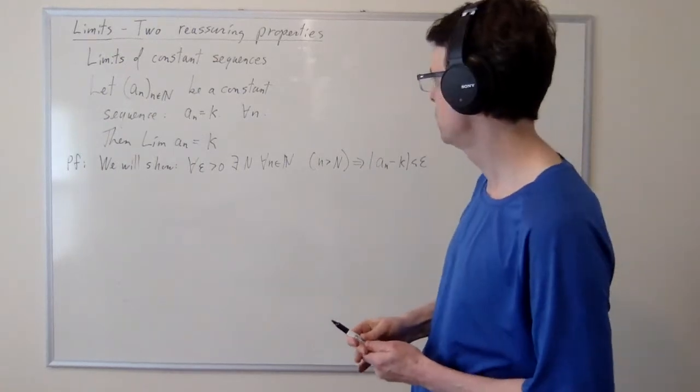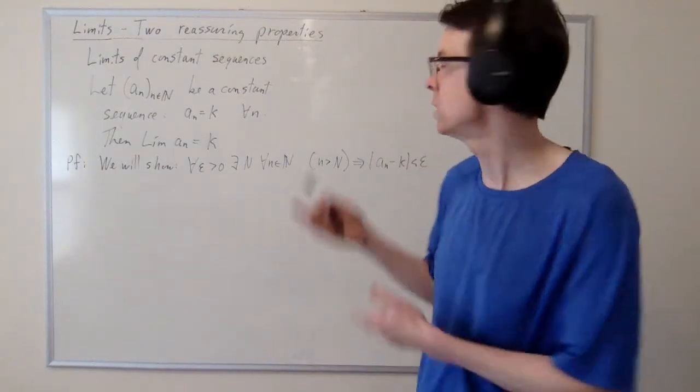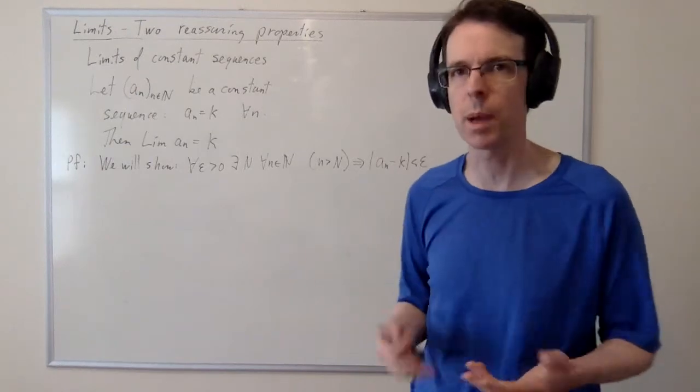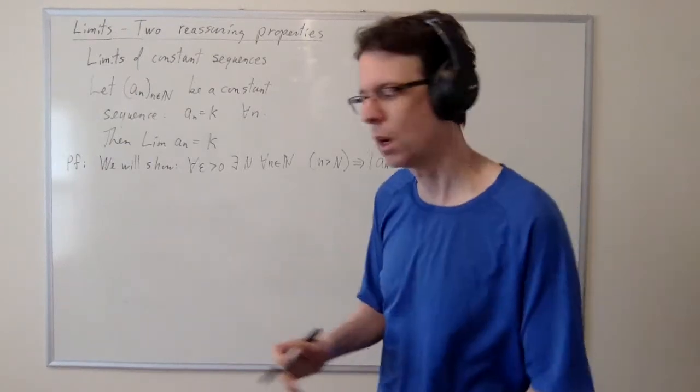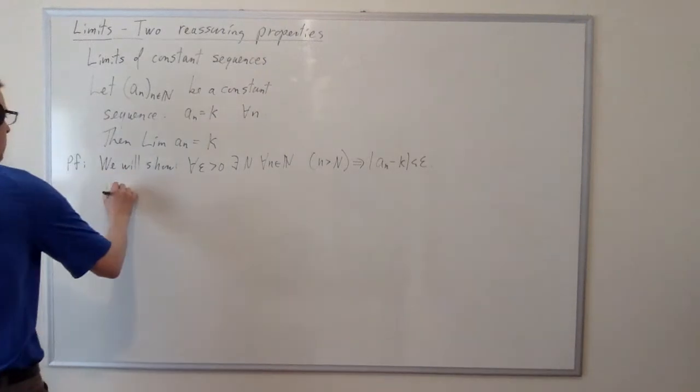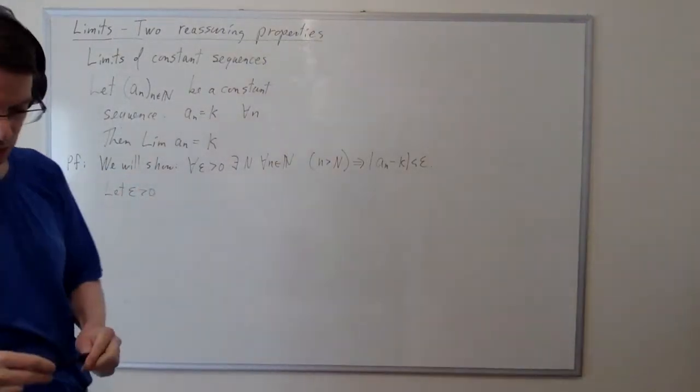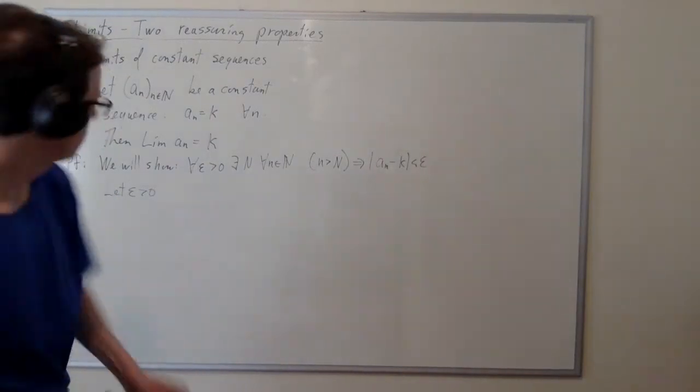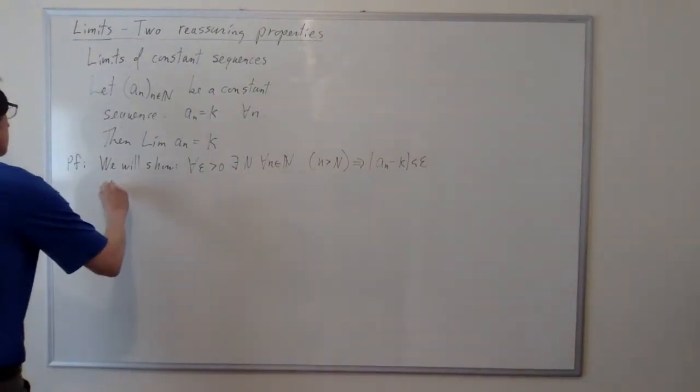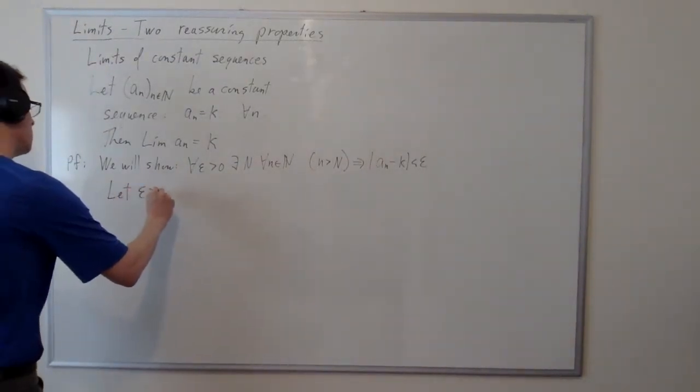So how are we going to do this? Well, same way we always do it. We're going to let epsilon be arbitrary. We're going to choose a cap N, et cetera. So let's see if we can do it. So let's let epsilon be an arbitrary positive number. So let's let epsilon be a positive number.